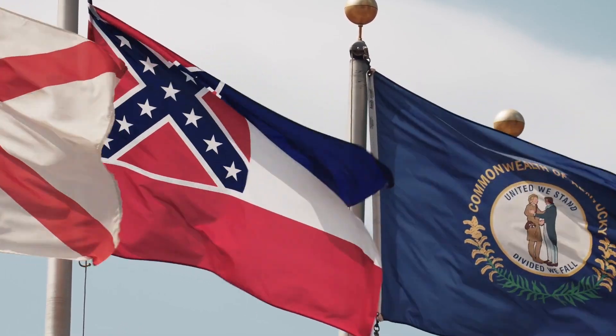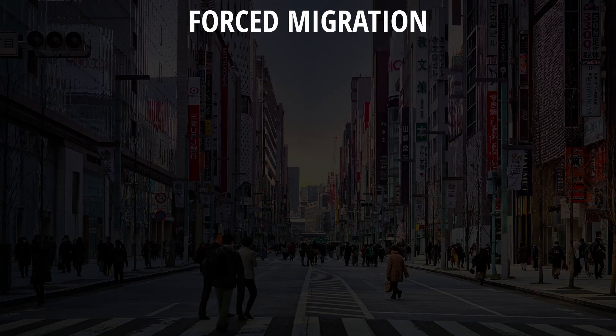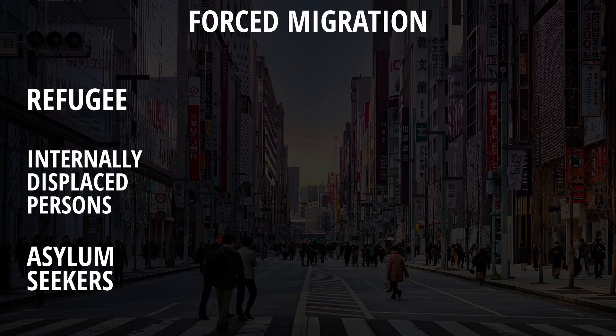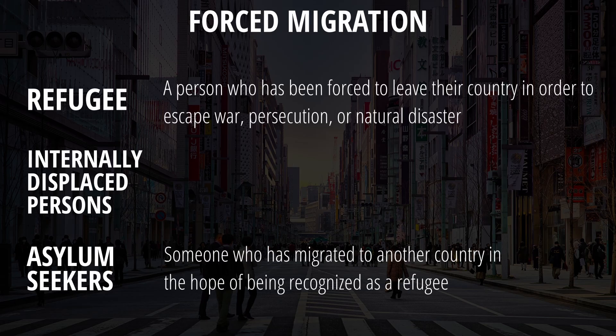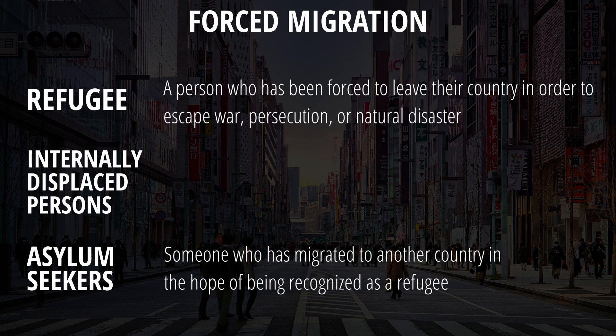Speaking of the Haitian and Ukrainian situations, these events relate to three important vocabulary terms: refugees, internally displaced persons, and asylum seekers — all of which are a byproduct of forced migration. A refugee is a person leaving their country because of a push factor such as persecution or a natural disaster. Asylum seekers are similar to refugees; however, the main difference comes down to recognition from the government. A refugee within the U.S. is recognized and protected by the government, whereas an asylum seeker has made their way to the U.S. without legally being recognized as a refugee.